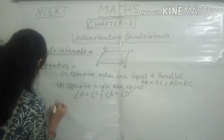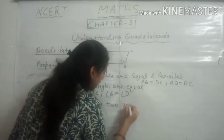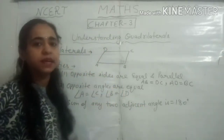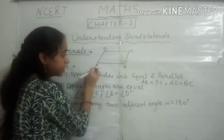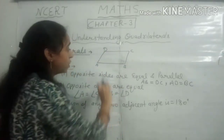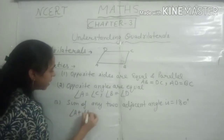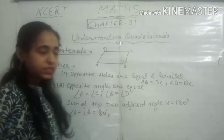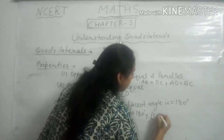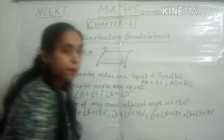The third property is: the sum of any two adjacent angles is 180 degrees. So angle A plus angle B equals 180, angle B plus angle C equals 180, angle C plus angle D equals 180, and angle D plus angle A equals 180. This is the number three property.